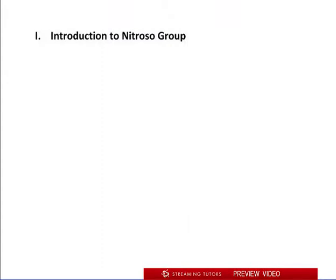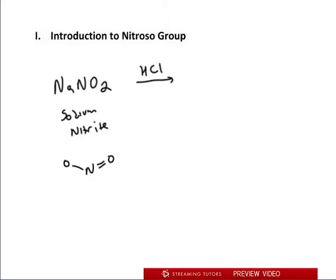The first thing I want to talk about is what is this whole idea of a nitroso group. If you take NaNO2, so if you have sodium nitrite, with sodium nitrite, what happens here is by adding acid like HCl, we're gonna wind up turning this into HNO2, which is called nitrous acid.